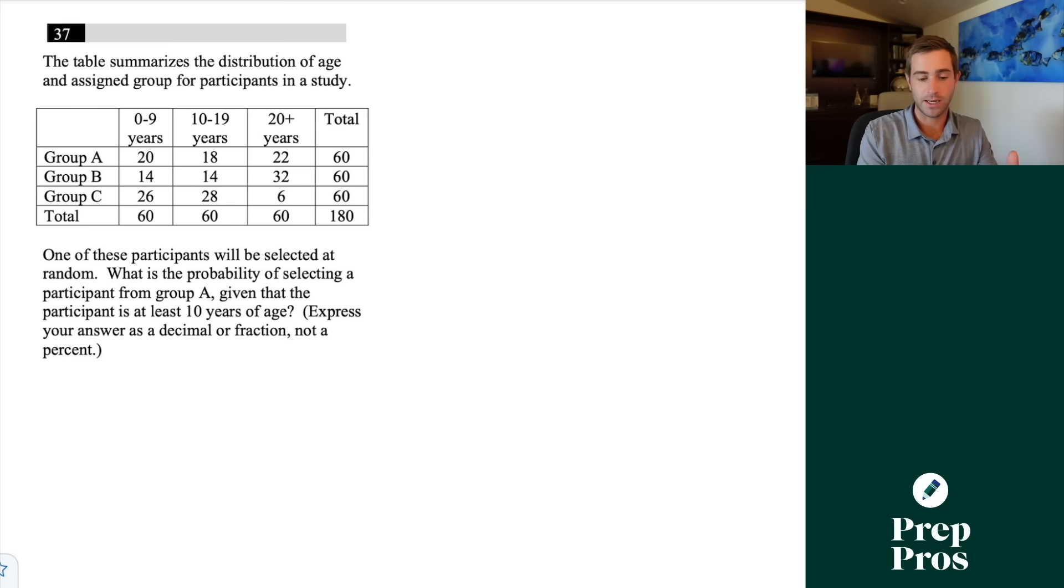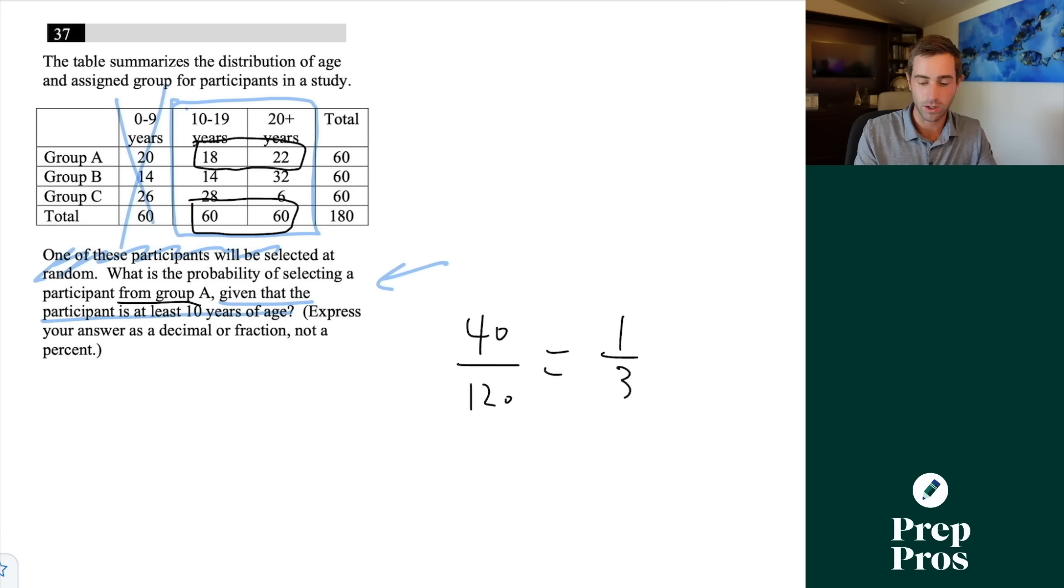One of these participants will be selected at random. This sentence is not important. We want to look for the sentence where we're actually asked the question. What is the probability of selecting a participant from group A, given that the participant is at least 10 years of age? Well, here's my condition. Given the participant is at least 10 years of age, I cannot use anyone who's 0 to 9 years old. So now out of this remaining part of the table, we're looking for what is the probability of selecting a participant from group A. Well, that's going to be our 18 plus 22 out of our 60 plus 60. So this is 40 over 120, which gives us our correct answer of 1 over 3.